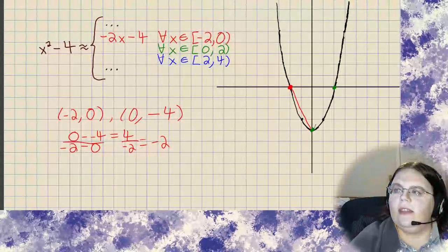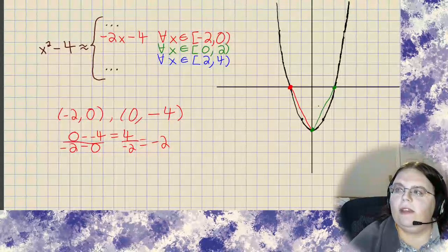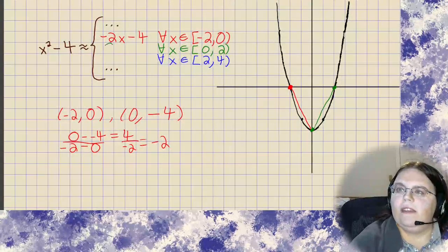So what I'll have here is negative 2x minus 4. Now, I see that that is symmetric, so I'm expecting that to be positive 2x minus 4.